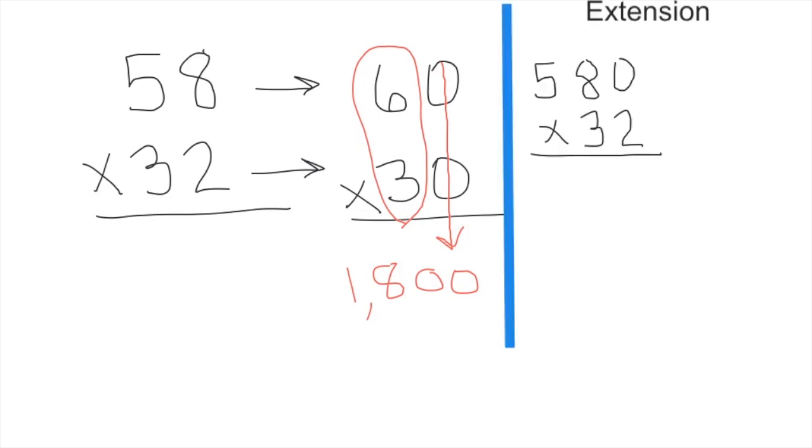I want to take this problem a step further by including an extension. Let's say that we were estimating a product by rounding, and we had 580 times 32 rather than 58 times 32. The process is the same. We will first round 580 to 600 because we are rounding it to the greatest place. We will round 32 to 30, and now we are ready to multiply 600 times 30.